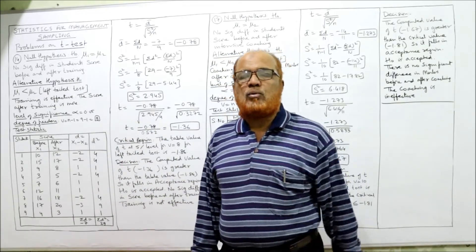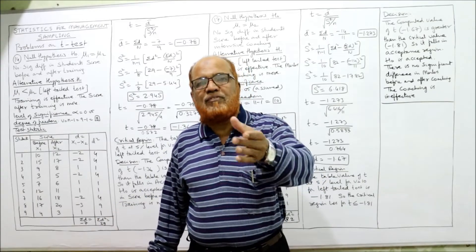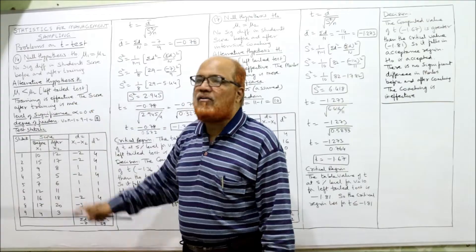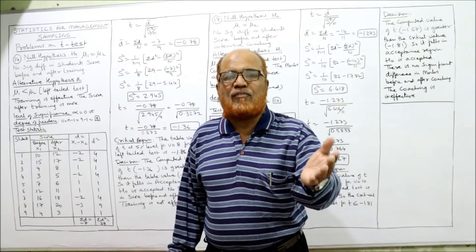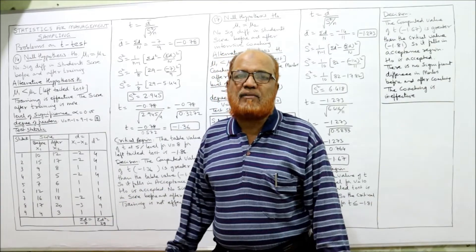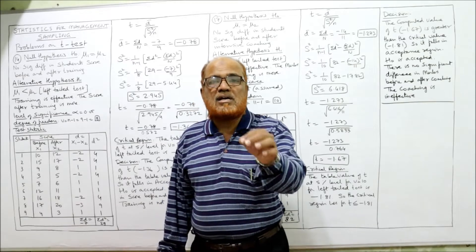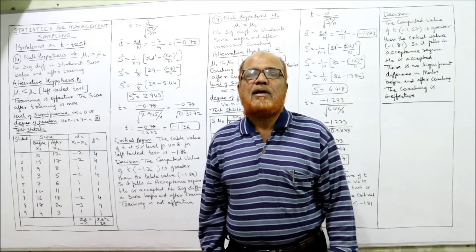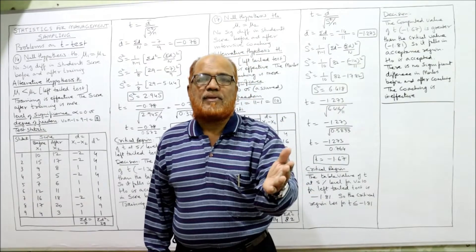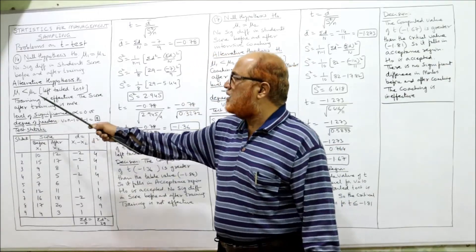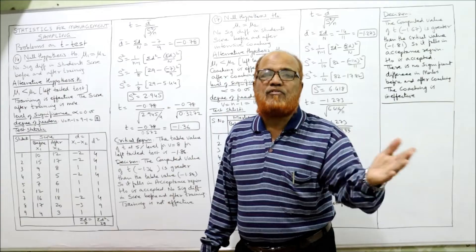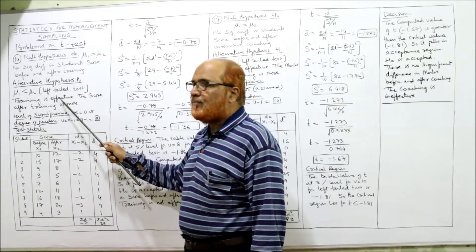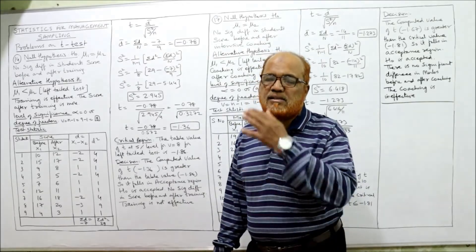Null hypothesis: μ₁ = μ₂ — no significant difference in scores before and after training, meaning the training is ineffective and scores remain the same. Alternative hypothesis: the training is effective, so the score after training is more than before. That means μ₁ < μ₂, where μ₁ is the score before training and μ₂ is the score after. This is a left-tail test.